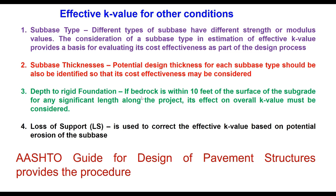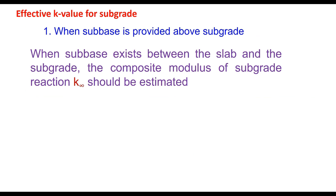The second correction is depth to rigid foundation. If bedrock is within 10 feet of the surface of the subgrade for any significant length of project, its effect on overall k must be considered. The third parameter is loss of support, which can be because of erosion of the subgrade, and that will change the type of support provided by the base to the slab.